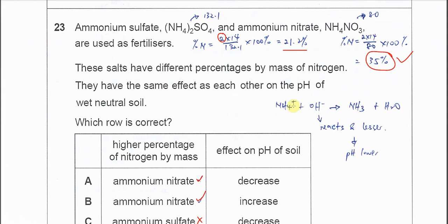We know that ammonium will react with hydroxide in the soil to produce ammonia and H2O. So which means if ammonium is there, hydroxide will react and become lesser. When the hydroxide is lesser in the soil, the pH is lower.